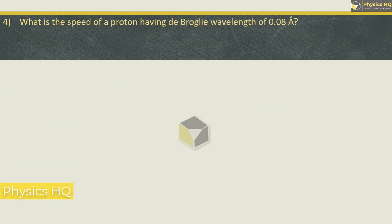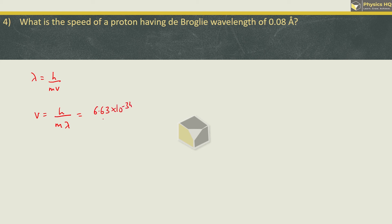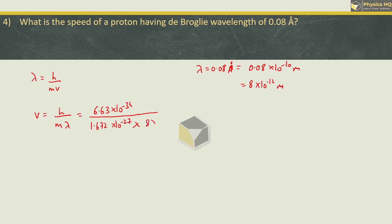Next sum: what is the speed of the proton having de Broglie wavelength of 0.08 Angstrom? Using de Broglie formula lambda equals h by mv, velocity equals h divided by m times lambda. H is 6.63 × 10⁻³⁴, mass of proton is 1.672 × 10⁻²⁷ kg, and wavelength 0.08 Angstrom equals 8 × 10⁻¹² meters. Using log to solve, we get the final answer as 49.57 × 10³ m/s.